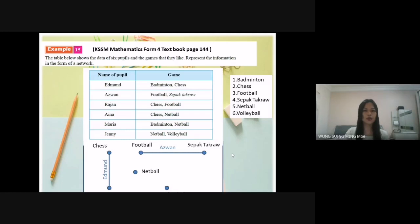Rajan likes to play chess and football, so I connect the point chess to football and label it Rajan. Aina likes to play chess and netball. So I draw a line from chess to netball and label it Aina.